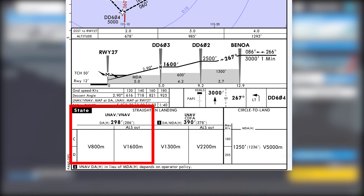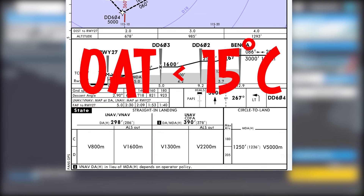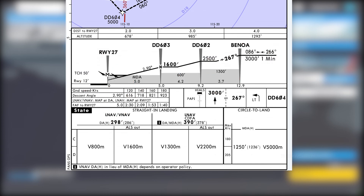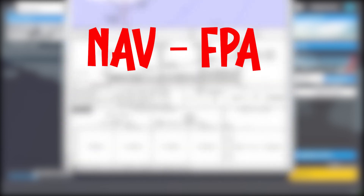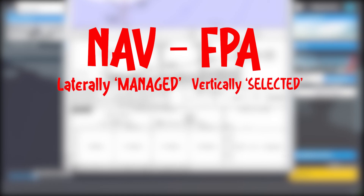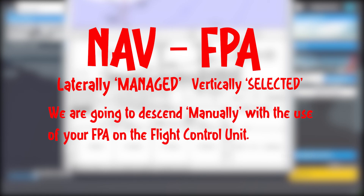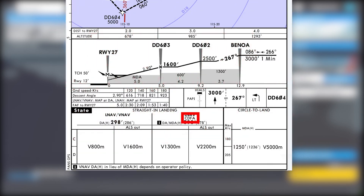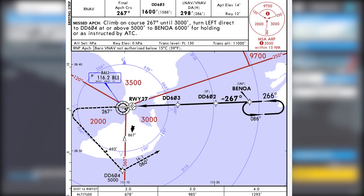Today I'm going to set the temperature to around 25 degrees Celsius, so we are not limited by the temperature limitation and I will stick with the LNAV/VNAV minima of 298 feet. If your temperature is below 15 degrees, you cannot use the vertical profile as calculated by the aircraft and must use the NAV flight path angle technique — laterally managed and vertically selected — setting your flight path angle of 2.9 degrees on the FCU. CDFA stands for continuous descent final approach.